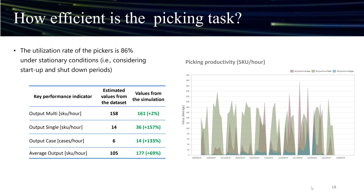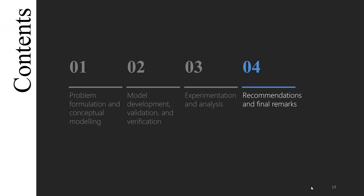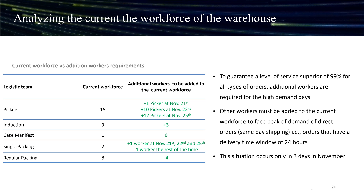The utilization rate of pickers is 86% under stationary conditions — considering startup and shutdown periods — indicating a margin for improvement in picking tasks. The wave planning methodology clearly attempts to maximize picking output. In the final part of this presentation, I would like to provide some recommendations based on the simulation results. To guarantee a service level above 99% for all order types, additional pickers are required for high demand days. Other workers must change positions to face peaks of direct orders, which have a delivery time window of 24 hours.